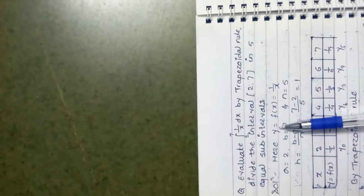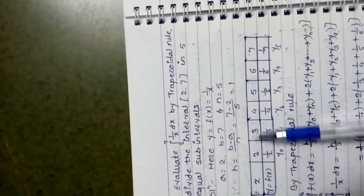Here y = f(x) = 1/x is the given function. The lower limit a = 2, the upper limit b = 7, and n = 5 sub-intervals. First we find h using h = (b - a) / n = (7 - 2) / 5 = 1. So the width of each interval is 1, meaning x goes 2, 3, 4, 5, 6, 7 with a difference of 1 between each.